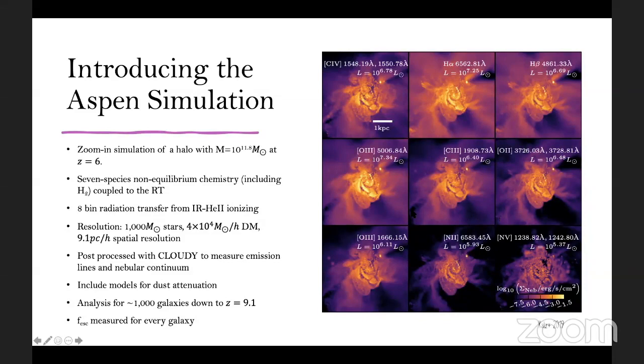And if you do this properly, you can see on the right, you can create these beautiful maps of things like oxygen-3 5007 angstroms, carbon-3 emission lines, oxygen-2 emission lines. And just for this one galaxy, there's about three million cloudy models that go into it. And we do this for the more than 1,000 galaxies that every single snapshot we output in the simulation.